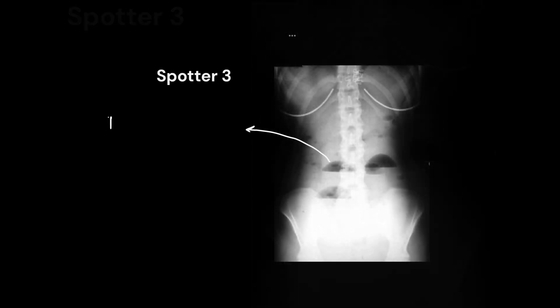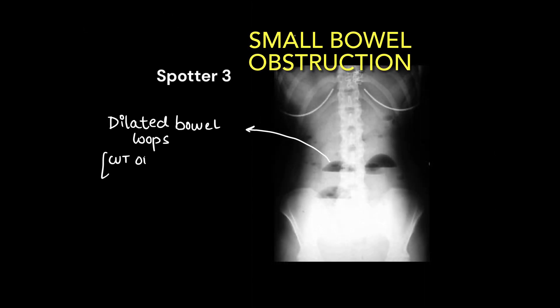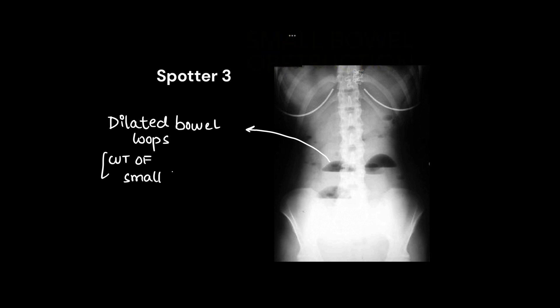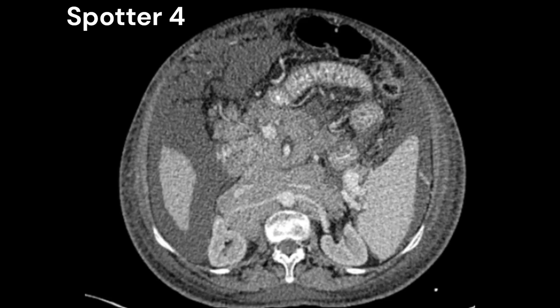This is an easy one — small bowel obstruction on abdominal X-ray. We can see dilated bowel loops. The cutoff is: small bowel 3 cm, large bowel 5 cm, and cecum 9 cm. We can see abnormal air-fluid levels.